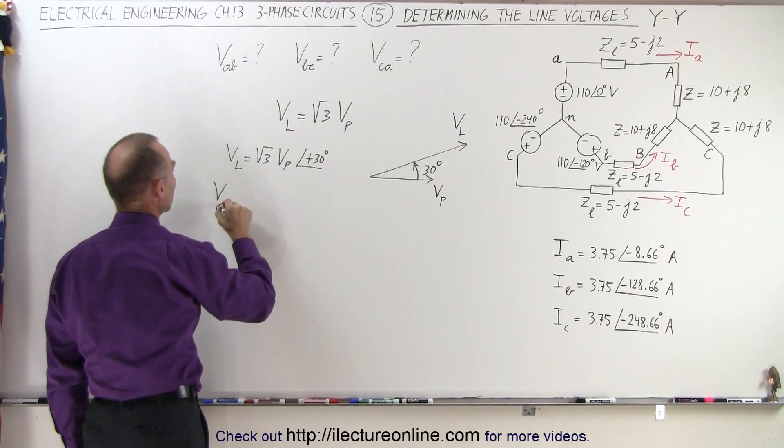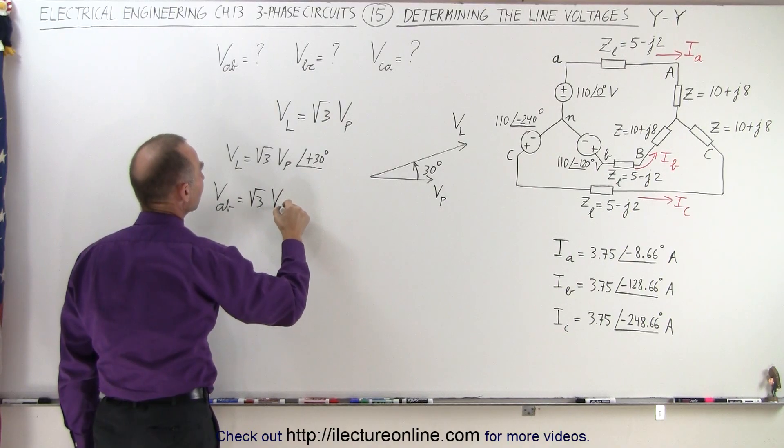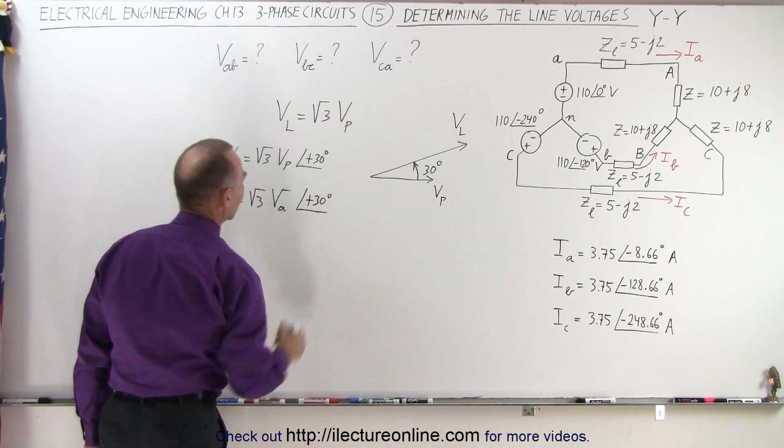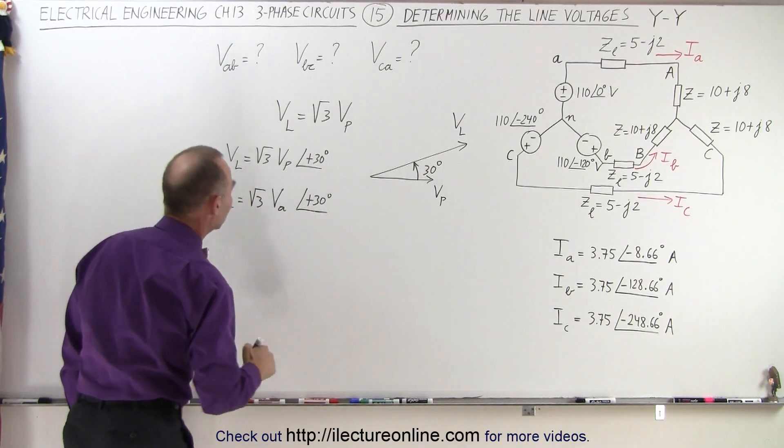So we can say that VAB is going to be equal to the square root of three times VA plus a 30 degree phase difference. And so that's in the positive direction, and that should be VA like this.